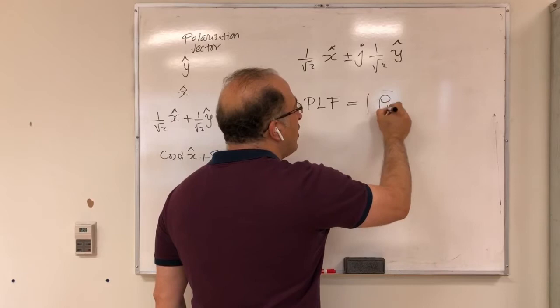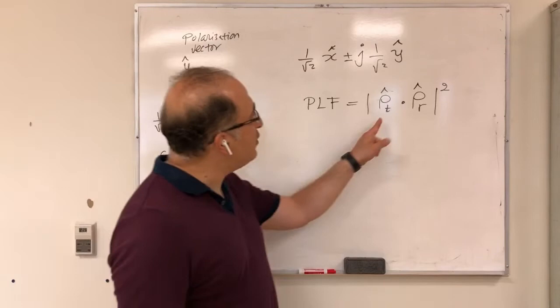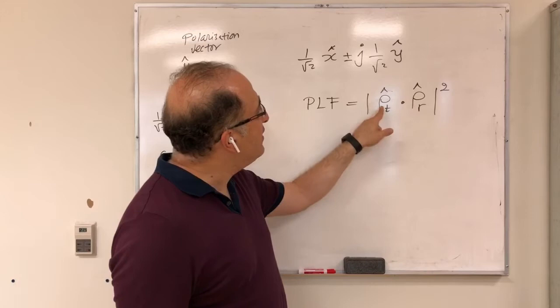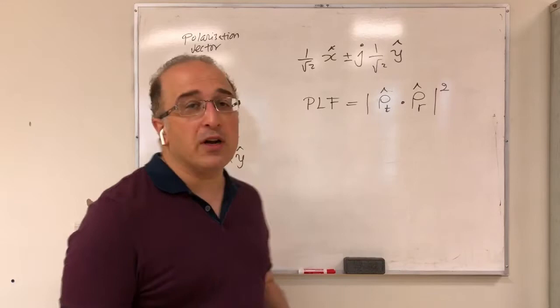I can write it as rho-hat_transmit dotted with rho-hat_receive, the whole thing squared. So rho-hat_transmit is the polarization vector of the transmit antenna, rho-hat_receive is the polarization vector of the receive antenna. You dot product them, square it, and you get your polarization loss factor.